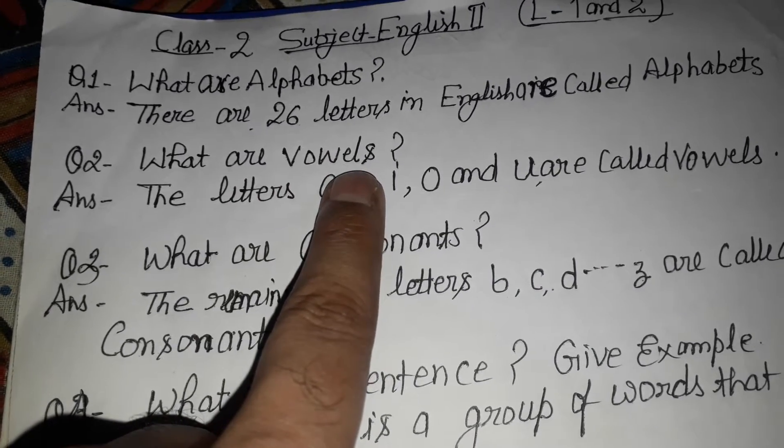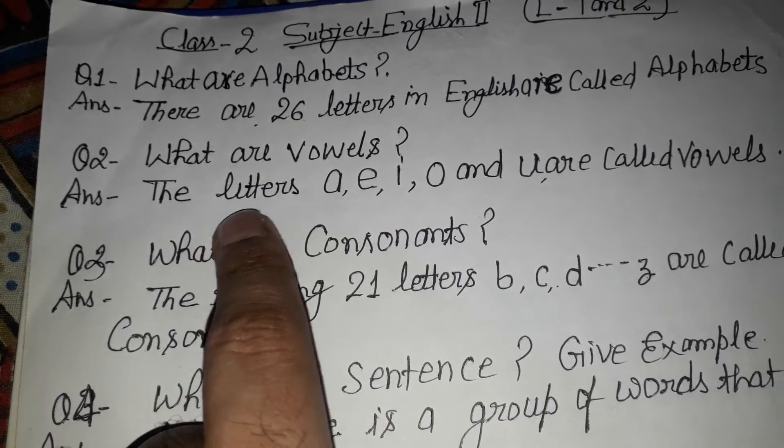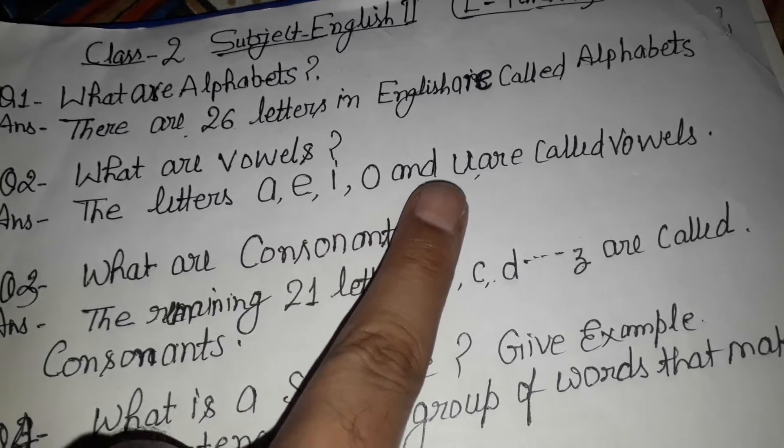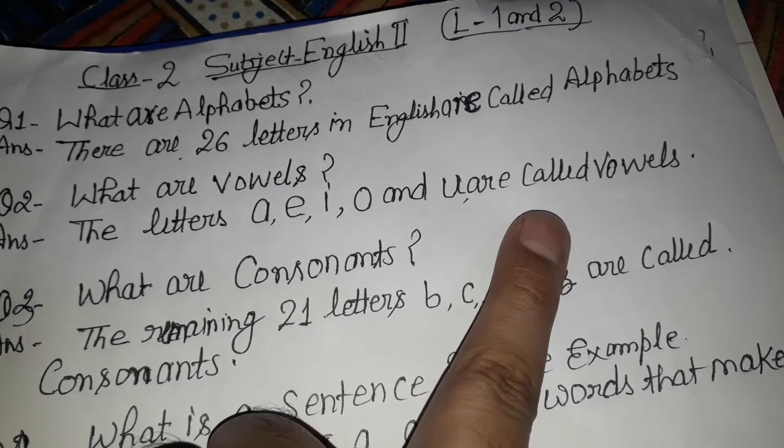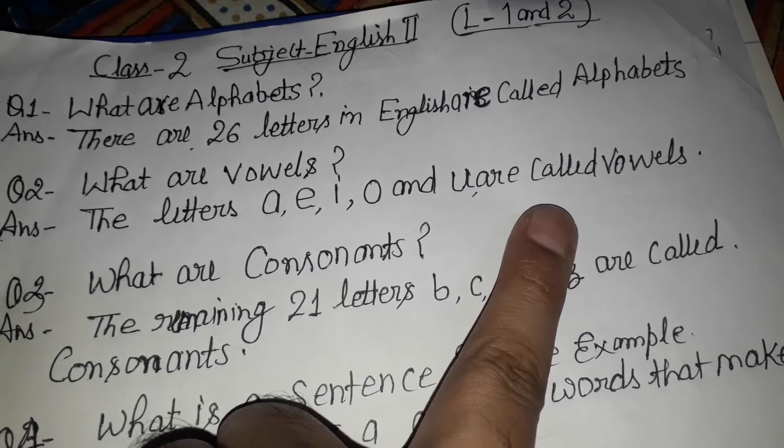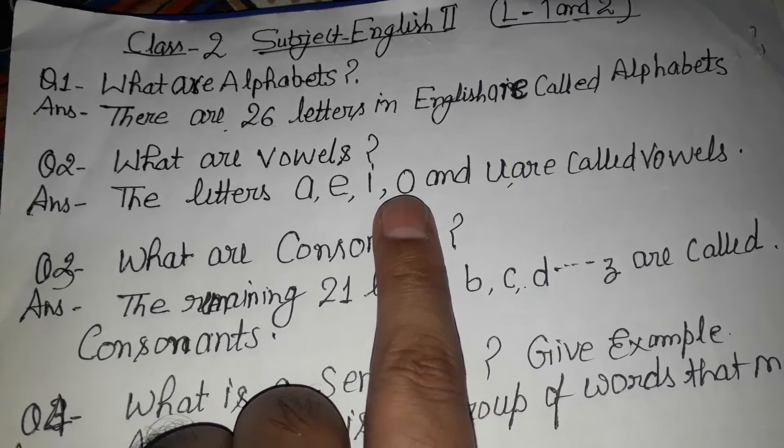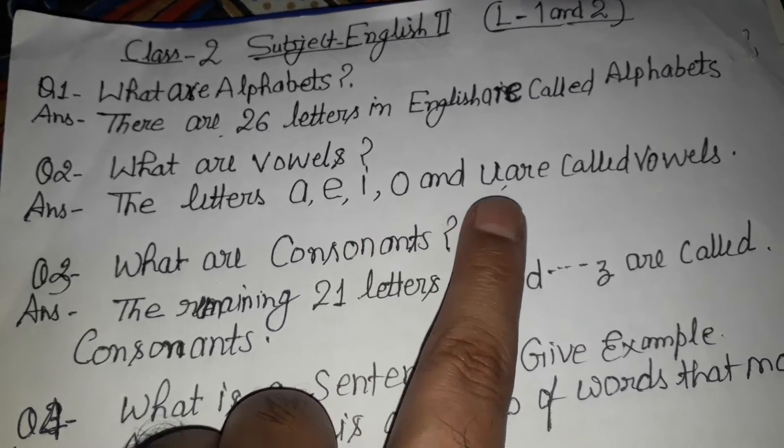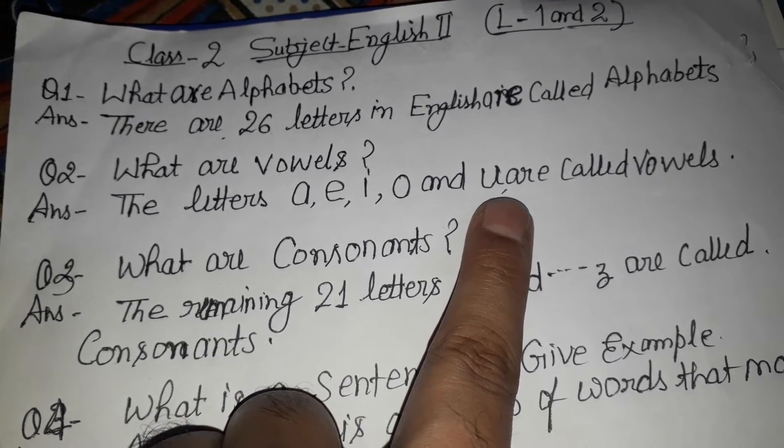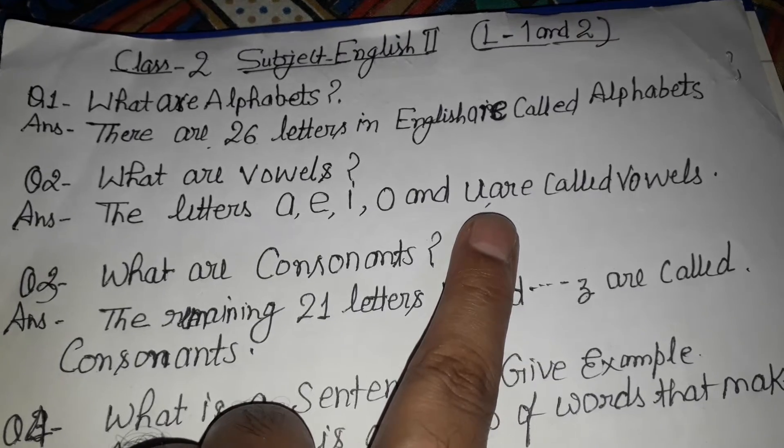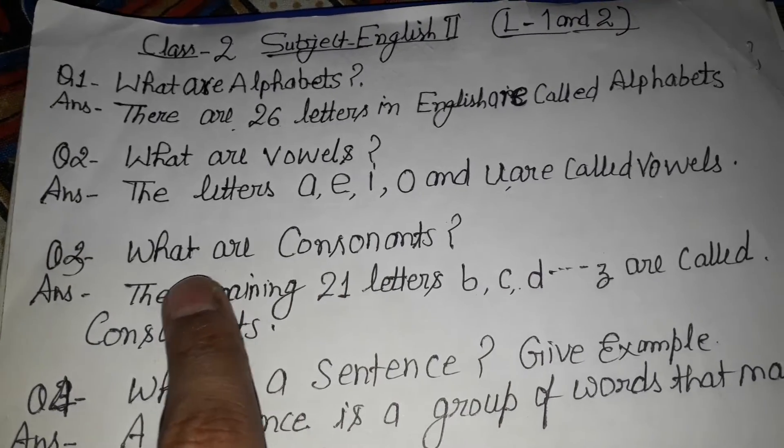What are vowels? The letters A, E, I, O, U are called vowels. These letters are called vowels.